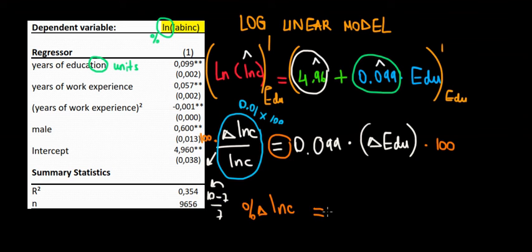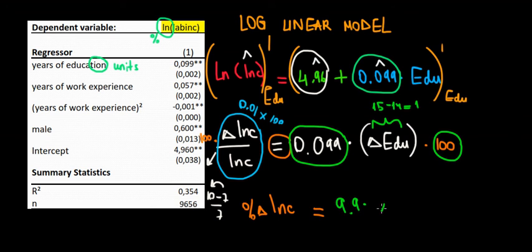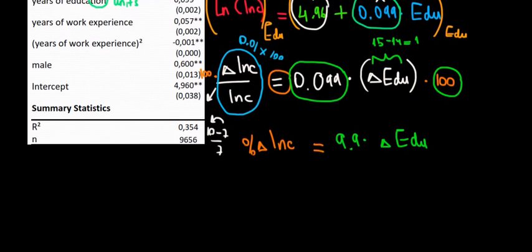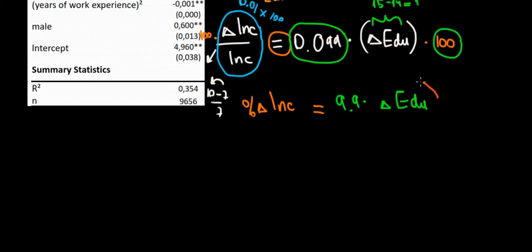Let's write percentage change in income, which was the initial goal. We wanted to know what is the percentage change in income based on a unit change. Because this is just a change in education, education here for instance goes from 14 years to 15 years. This goes 15 minus 14, the delta is equal to 1, 1 unit change in education. That's what this is showing us. We group 0.099 times a hundred and that gives us 9.9. 9.9 times the change in education. So what we're showing right here is that when education increases by one unit, the effect in percent on income is 9.9 percent.